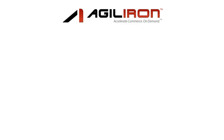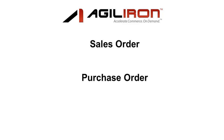In this video we are going to show the export of data from AgileIron into QuickBooks for three different types of transactions: a sales order, a purchase order, and a sales return. Once you see each of these, you will understand the basic concepts of mapping the detailed components of transactions.